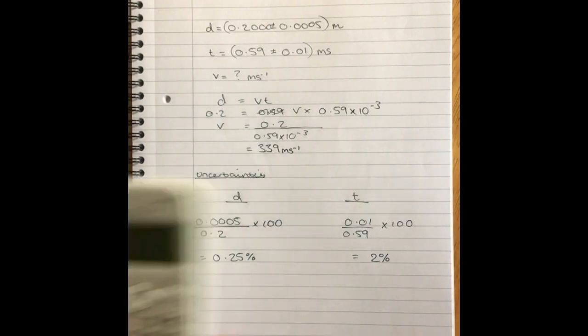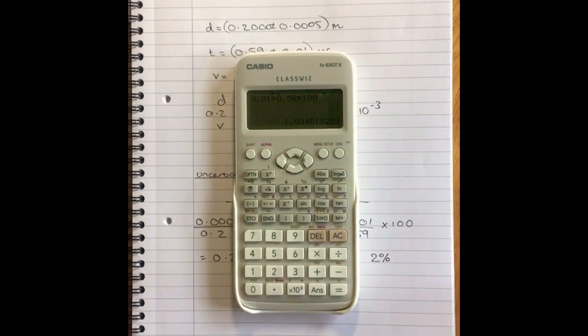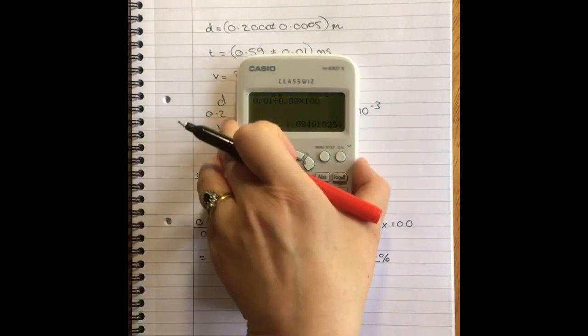Now there is an odd quirk. There always is, isn't there? If your first digit, your first significant figure is a one, you can state your second one. So I could have written 1.7% here. But I think that is more a rule that we tend to apply in advanced higher. So I would always stick in higher to a single sig fig for your uncertainty and just have no exceptions to that rule whatsoever.